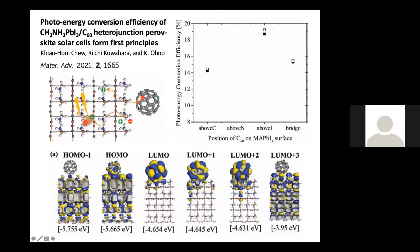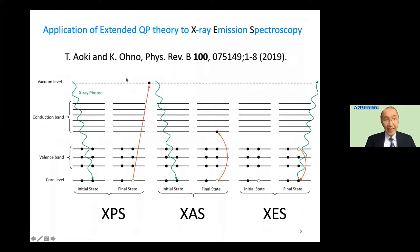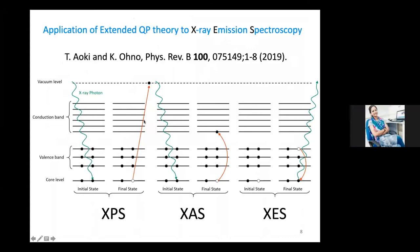This is an example of excited state calculation, specifically X-ray emission spectroscopy. In X-ray photoelectron spectroscopy (XPS), an X-ray photon is absorbed and a core-level electron is emitted to the vacuum level, creating a deep core hole. In X-ray absorption spectroscopy (XAS), the deep core-level electron is excited not to the vacuum level but to the conduction band, creating a bound state called an X-ray exciton.